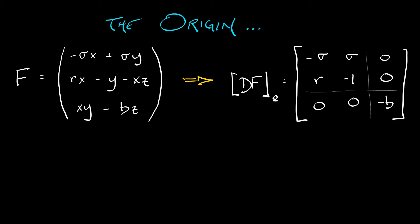So, we can see, for example, in that lower right-hand corner, that negative b, that eigenvalue, negative b, corresponds to an eigenvector that is along the z-axis.